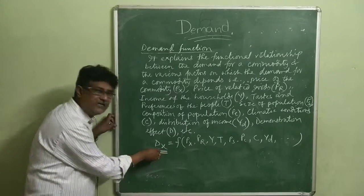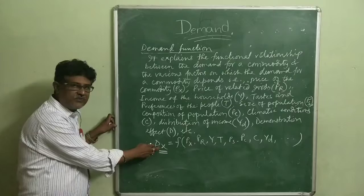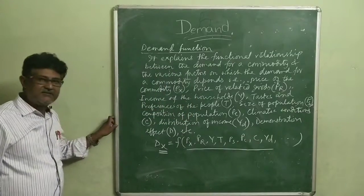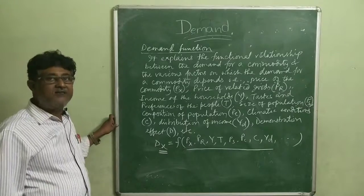So the functional relationship that exists between demand for any commodity, say X, and the various factors on which the demand for a commodity depends represents the demand function.